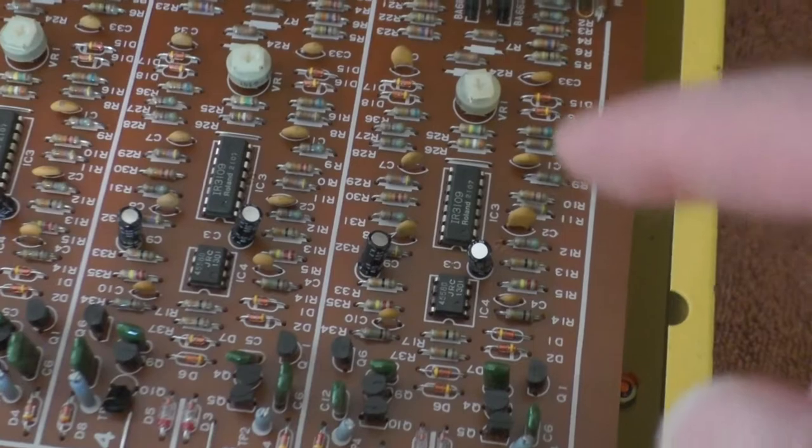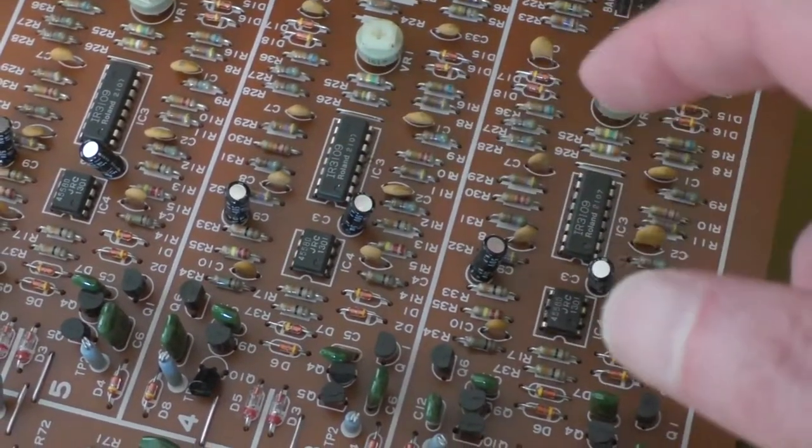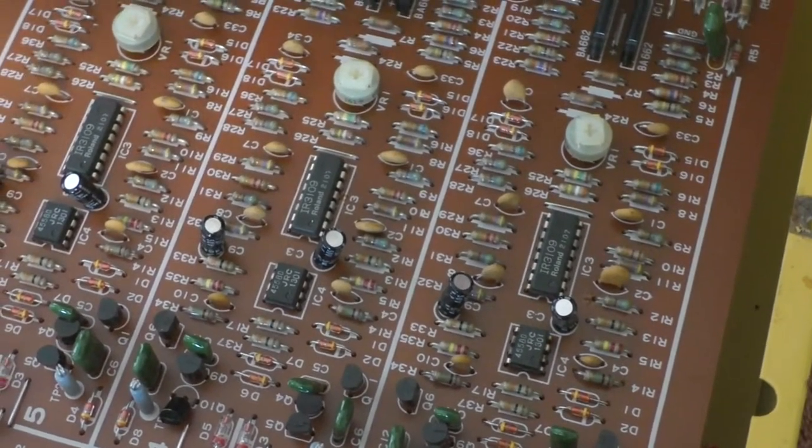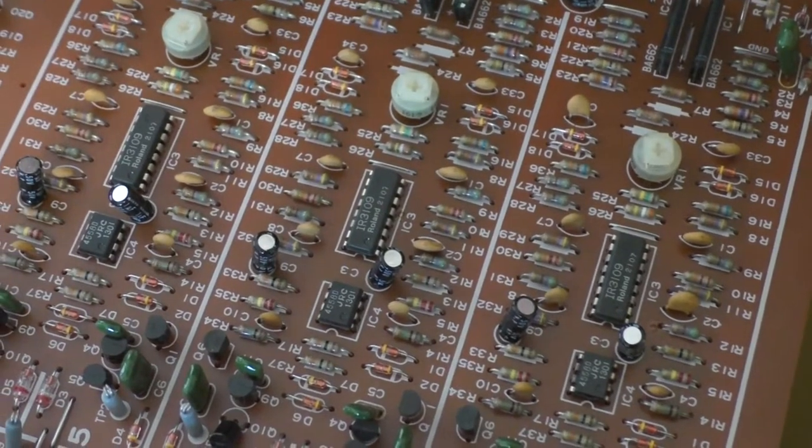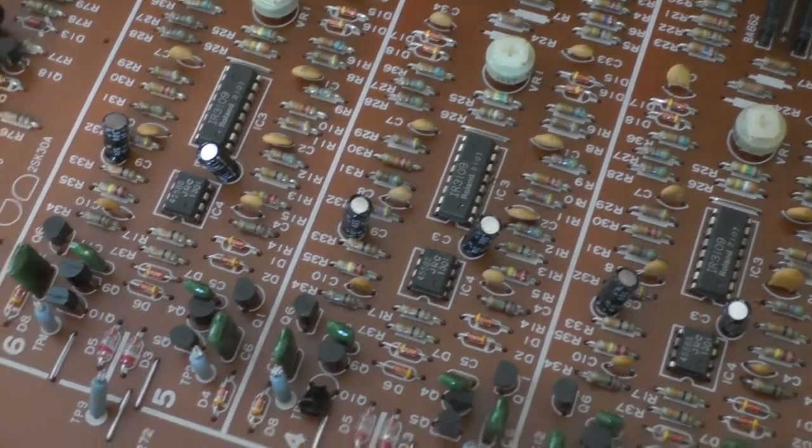Now in the Roland GR300, you'll find this exact same chip, but there's only one of them because in the Roland GR300 it's configured as a minus 24 dB per octave filter. So that's why in the GR300 the filter sweep seemed more dramatic because it's a stronger cutoff.